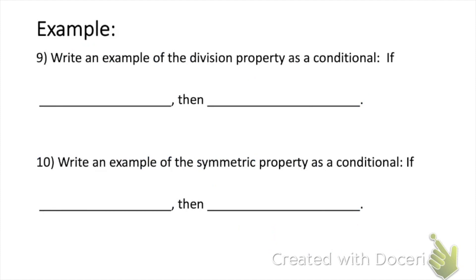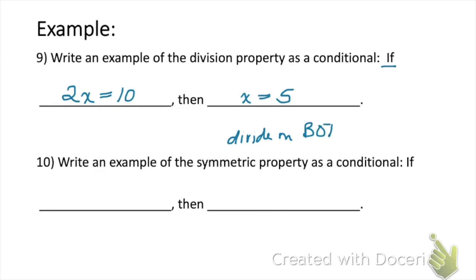Pause the video and try these on your own. Number nine says: write an example of the division property as a conditional — that is, an if-then statement with a hypothesis and conclusion. For example, the hypothesis: if 2x equals 10. Since we're using the division property, we divide both sides by 2, giving the conclusion that x equals 5. This is the division property since we divided on both sides.